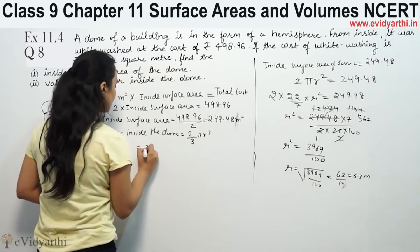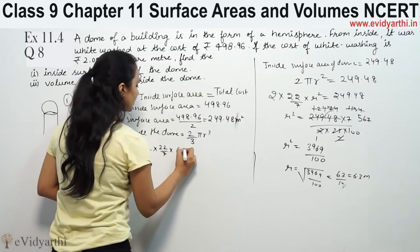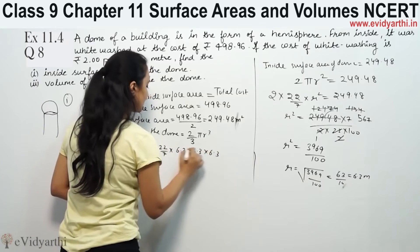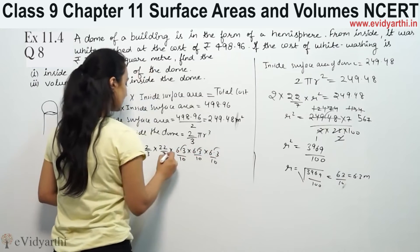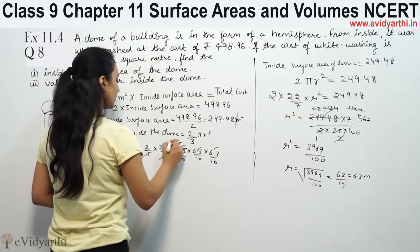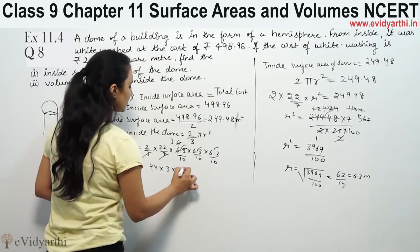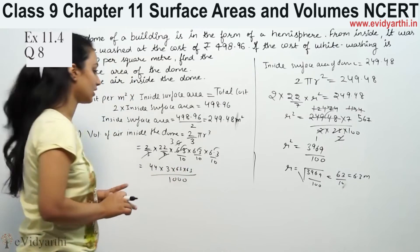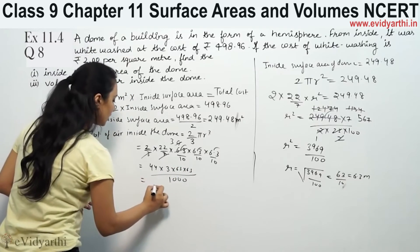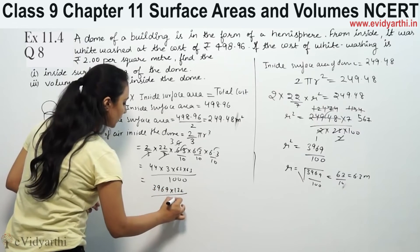So volume is 2/3 × 22/7 × 6.3 × 6.3 × 6.3. This simplifies to 44 × 3 × 63 × 63 divided by 1000.